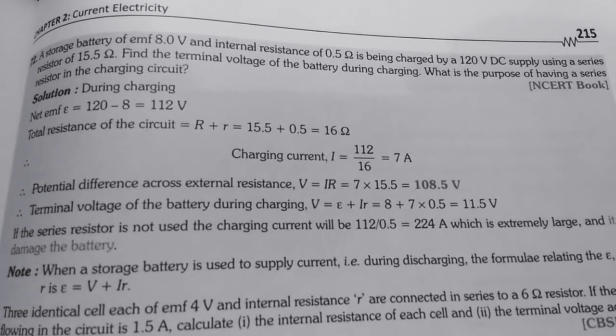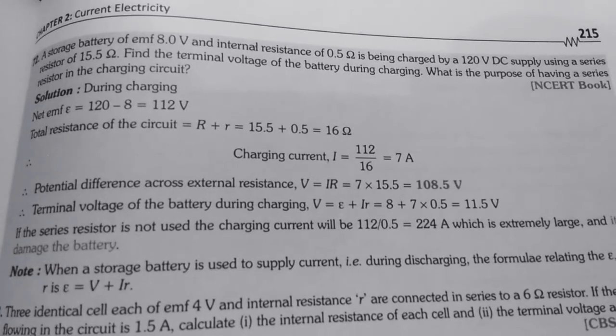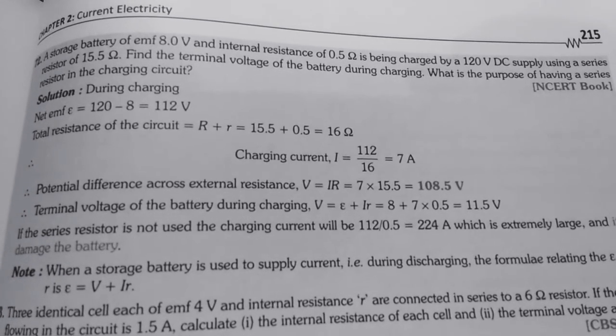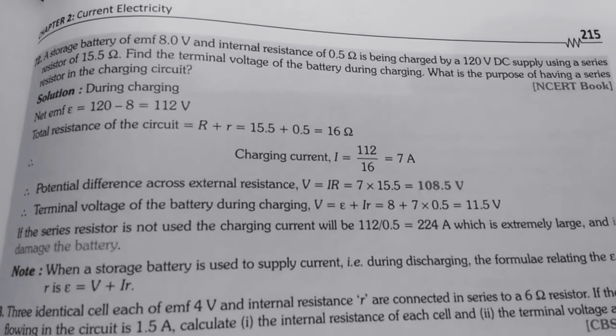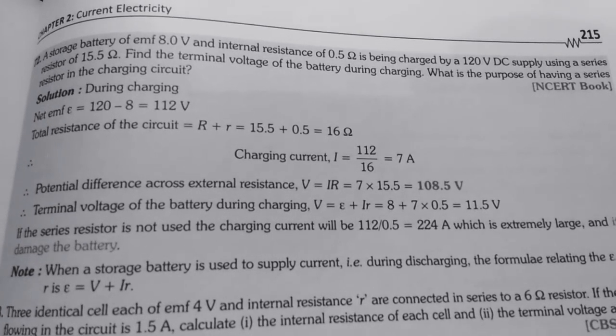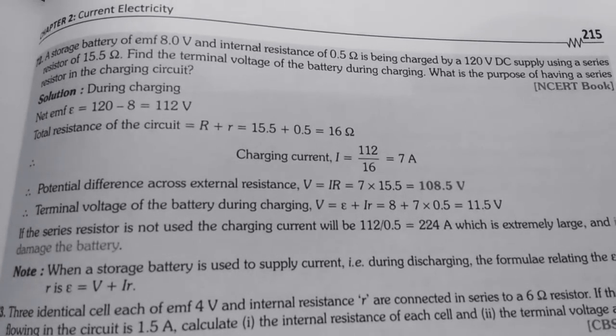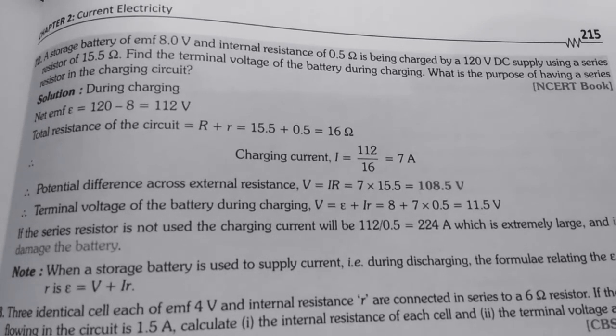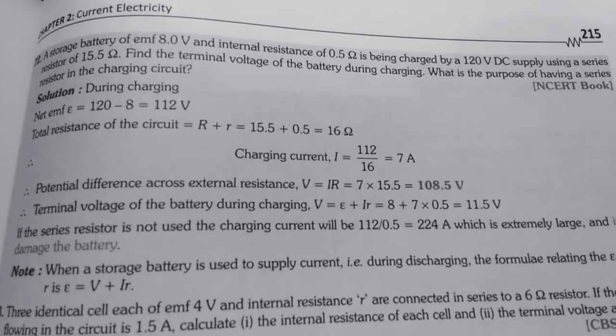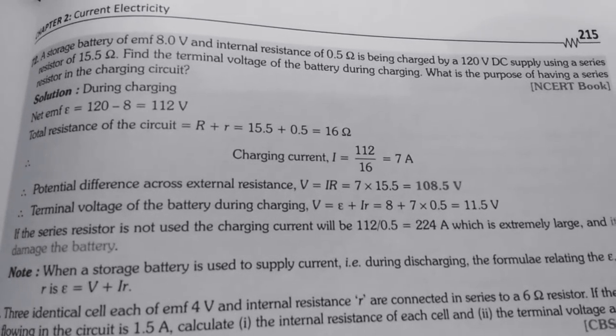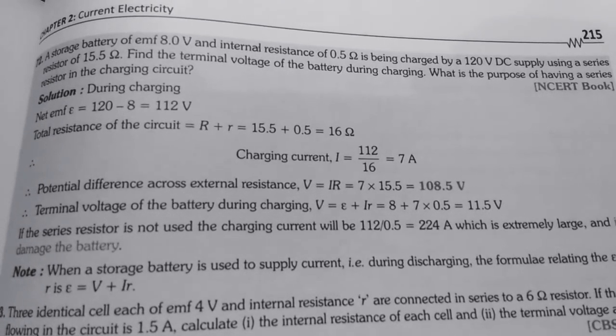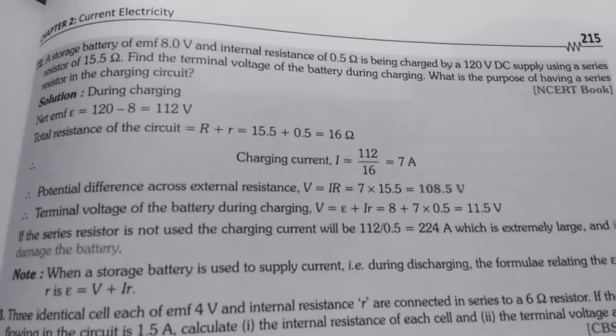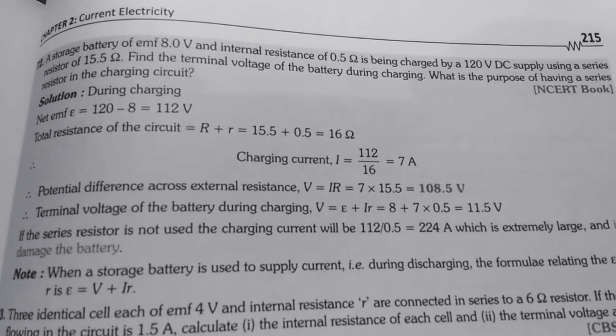Then we have to see total resistance. In question only it is given that series circuit is there. So, that's why the total resistance will be the algebraic sum of both the resistances. We will simply add external and internal resistances. So, 15.5 plus 0.5 equals to 16 Ohm. Then charging current I equals to V upon R. By putting the value of net EMF 112 and the value of resistance is 16 Ohm, we will get 7 Ampere. Potential difference across external resistance will be V equals to I into capital R. So, 7 into 15.5 equals to 108.5 volt.